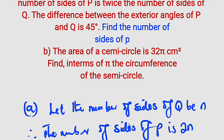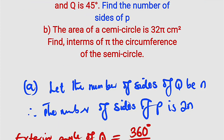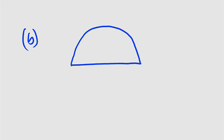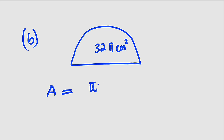Part b reads: the area of a semicircle is 32π cm squared. Find, in terms of pi, the circumference of the semicircle. The circumference means we should find the total length around the semicircle. Let me draw the semicircle first — it is half of a circle. The area of a full circle is πr squared, but since we are dealing with a semicircle, we divide by 2. Hence the area of a semicircle is πr squared divided by 2.